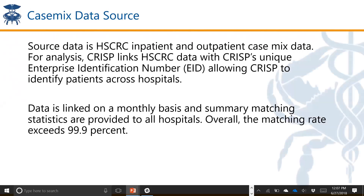A little bit about the source data: the source data is the HSCRC claims information, so inpatient and outpatient case mix data, including inpatient visits, observation visits, emergency room stays, outpatient surgeries and visits. That's the core of the data we present in the analysis. The data is slightly delayed since that information is not sent automatically to CRISP like the real-time ADT information that populates the clinical query portal and ENS service. It takes about six weeks for the case mix data to load into our databases. The case mix data is current through April at this point.